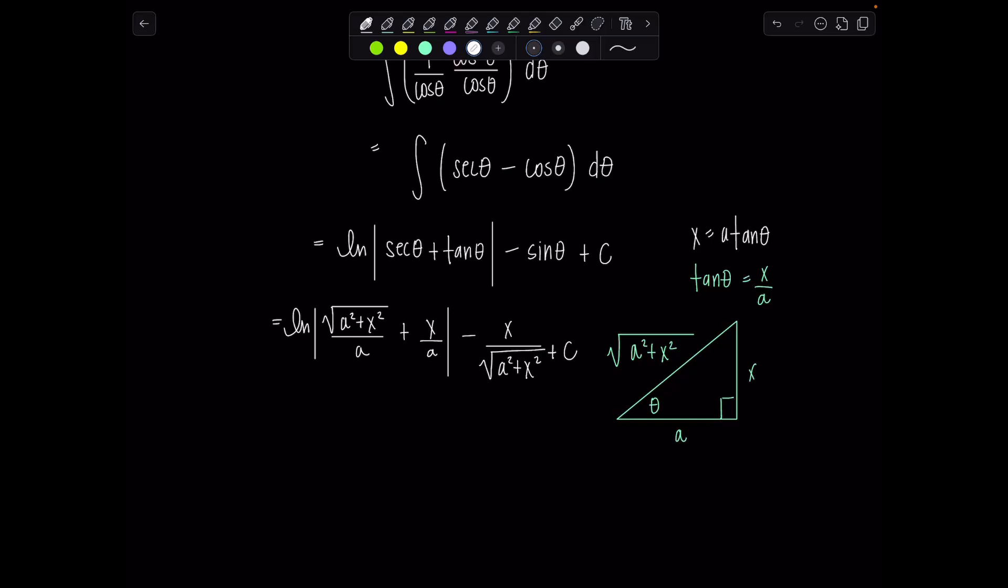And hold your horses. It is not time to box our final answer. We can still clean up, believe it or not. Yes. So here's a common little maneuver. A is just a constant. It's in the denominator. So I can rewrite this as natural log absolute value rad a squared plus x squared plus x minus ln of a. I've done this several times before so hopefully you remember this. Minus x over rad a squared plus x squared plus c. And then what do you do?